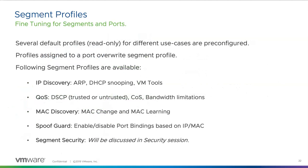Segment profiles: for IP discovery, ARP snooping inspects the VM's outgoing ARP and GARP to learn the VM's MAC and IP addresses. ARP snooping is applicable if the VM uses a static IP address instead of DHCP. DHCP snooping inspects the DHCP packets exchanged between the VM as DHCP client and the DHCP server. The segment security part we'll cover further in the security session next time on vBrownBag.